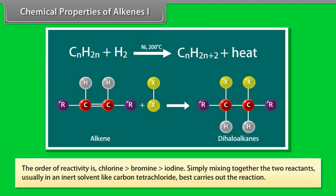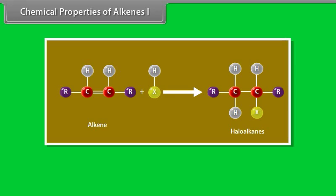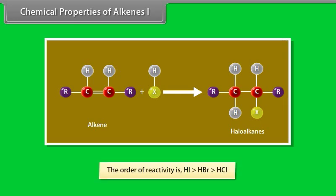Addition of halogens: alkenes react with halogens to form dihaloalkanes. The order of reactivity is: Cl2 > Br2 > I2. Simply mixing together the two reactants, usually in an inert solvent like carbon tetrachloride, best carries out the reaction. Addition of halogen acids: alkenes with concentrated aqueous solution of halogen acids give haloalkanes. The order of reactivity is: HI > HBr > HCl.